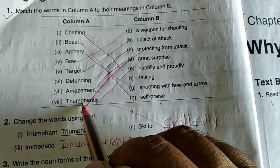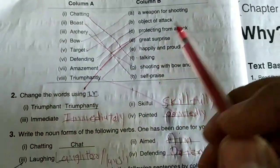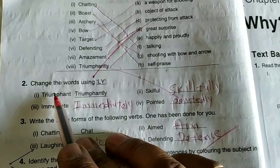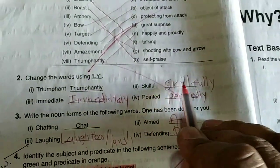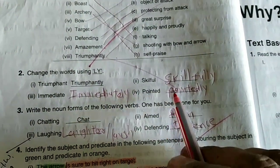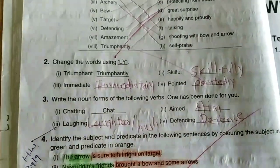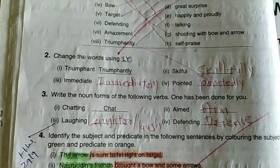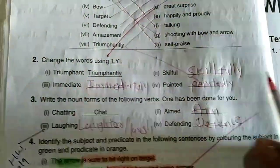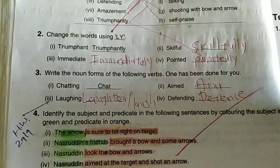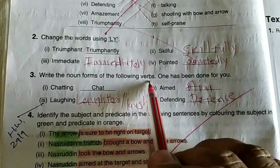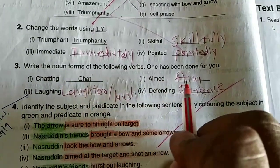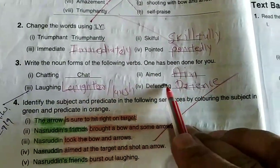Triumphantly means happily and proudly. Question 8: Change the words using '-ly.' Question 9: Triumphantly, skillfully, immediately, pointedly. Write the noun forms of the following words — one has been done for you. Noun form example: skillfully. Chatting → chat, aimed → aim, laughing → laughter (or laugh), defending → defense.